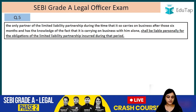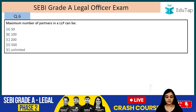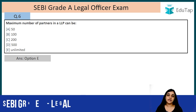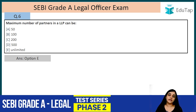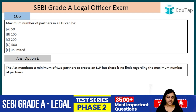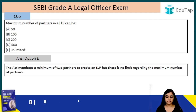Question number six: what is the maximum number of partners in an LLP? The answer is E — unlimited. The act mandates a minimum of 2 partners to create an LLP, but there is no limit prescribed regarding the maximum number of partners.